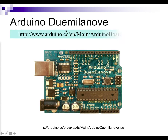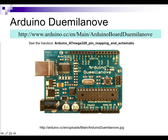The Duemilanove is Italian for 2009. This is the original version of the Arduino that was very popular. Now we've seen some cost-reduced versions of the Arduino Uno with quad-flat-pack surface-mount technology for the CPU. Here we see somebody has actually taken the time to put in a socket so you can remove the DIP and then program it or use it for something else, though I don't think people do that anymore with mass-produced Arduino Unos.